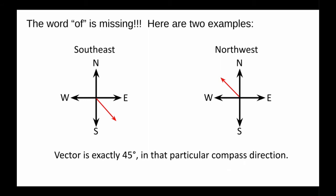So anytime you don't see the word of, they'll say south of west, it'll be 45 degrees in the southwest quadrant, and the vector is just 45 degrees.